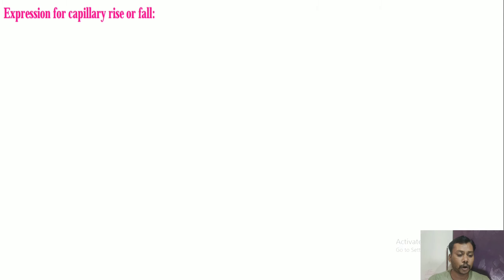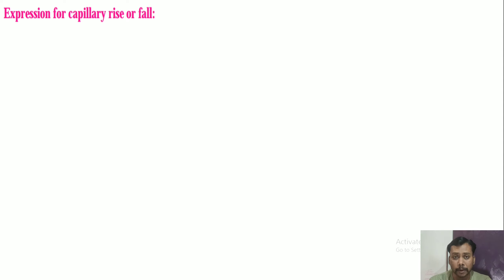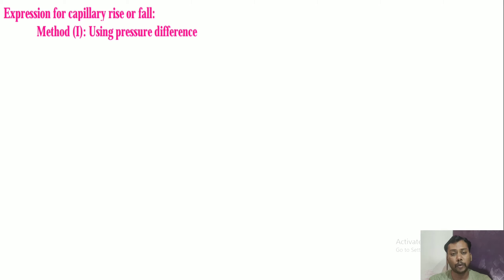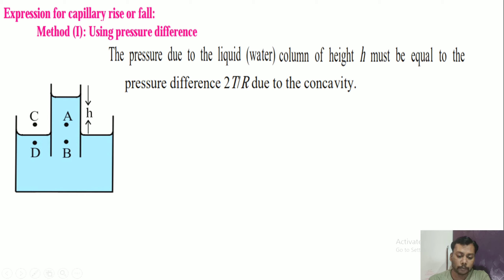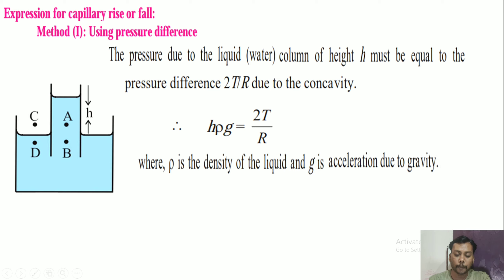Now the second part: expression for capillary rise or fall. The pressure due to the liquid column of height h must be equal to the pressure difference 2T upon R due to capillary concavity. The pressure difference formula applied here is from fluid mechanics: H·ρ·g is equal to 2T upon R, where T is surface tension, R is radius of curvature, H is height, ρ is density of liquid, and g is acceleration due to gravity.